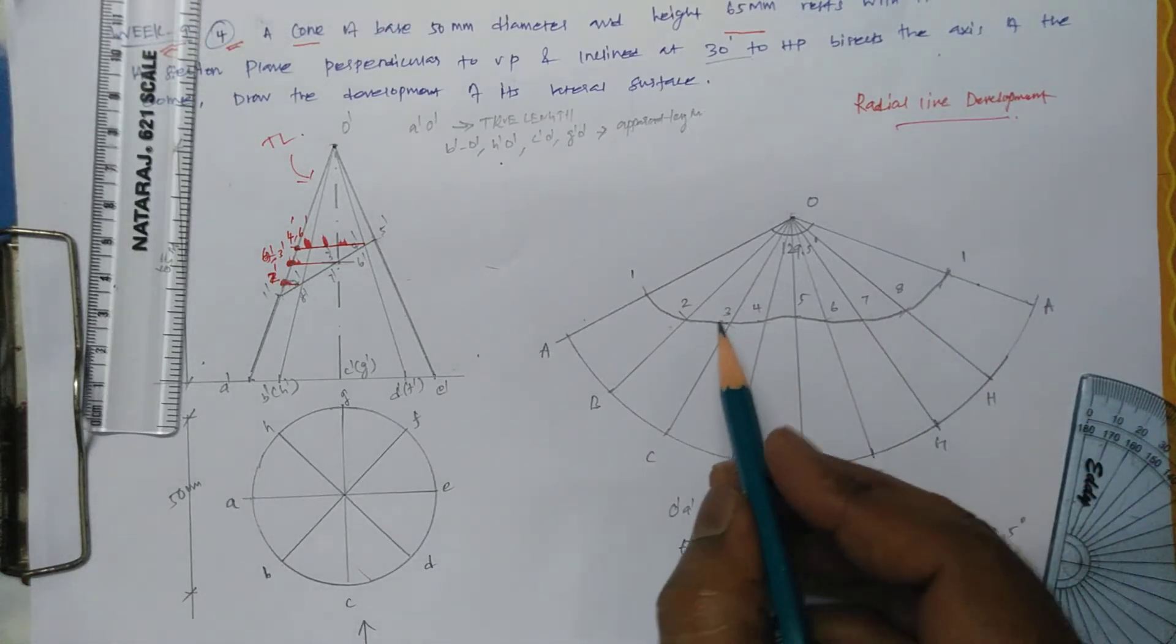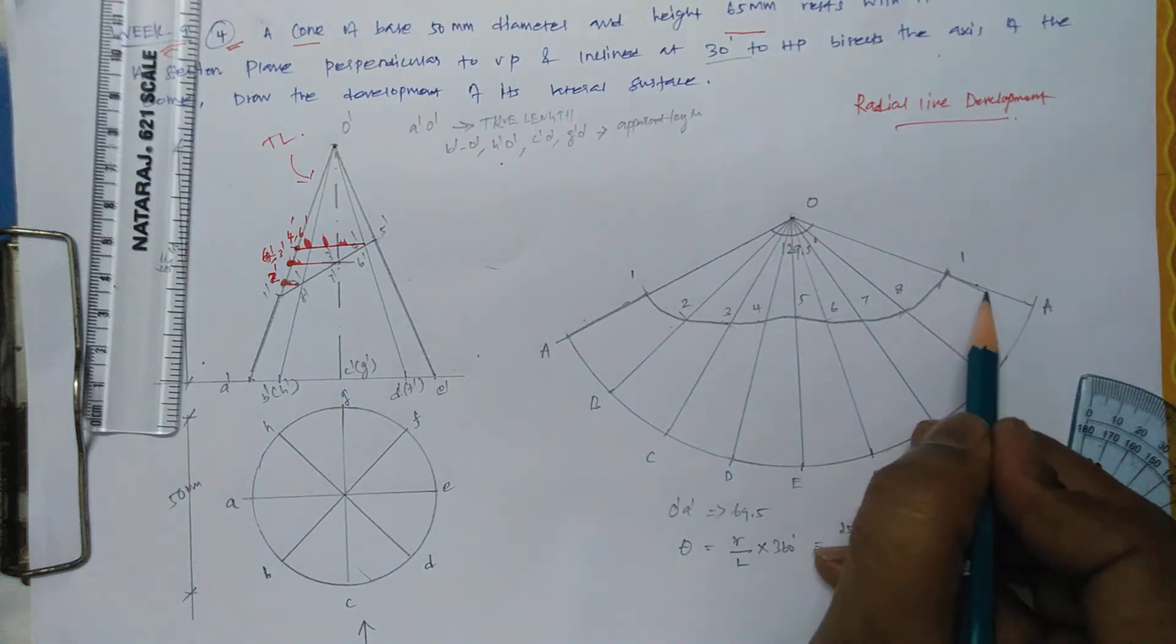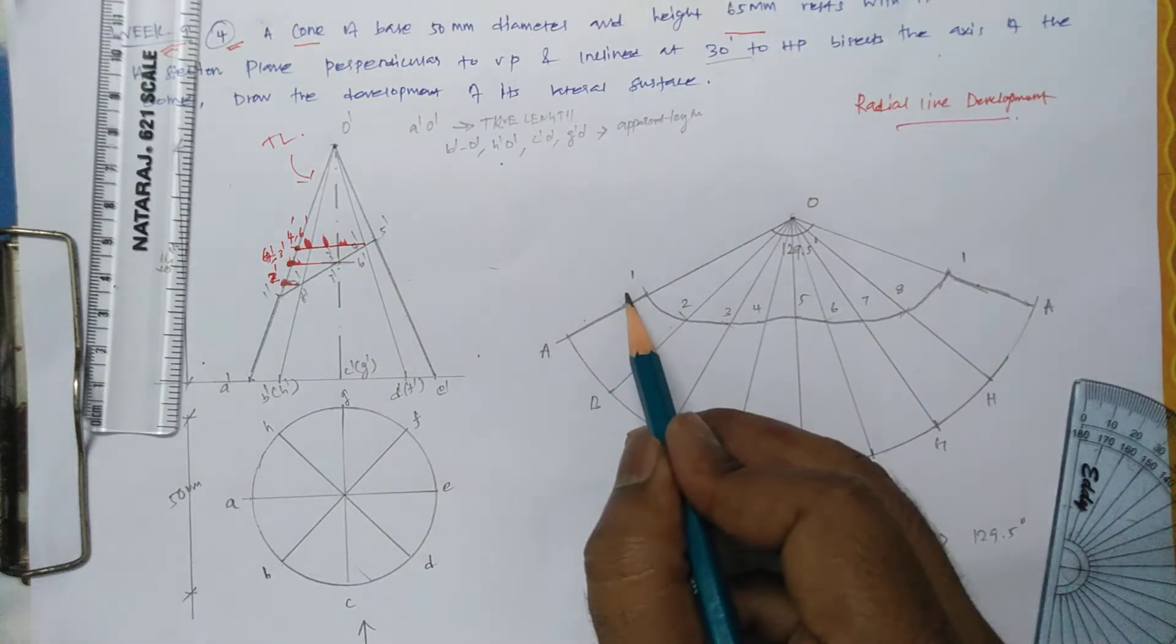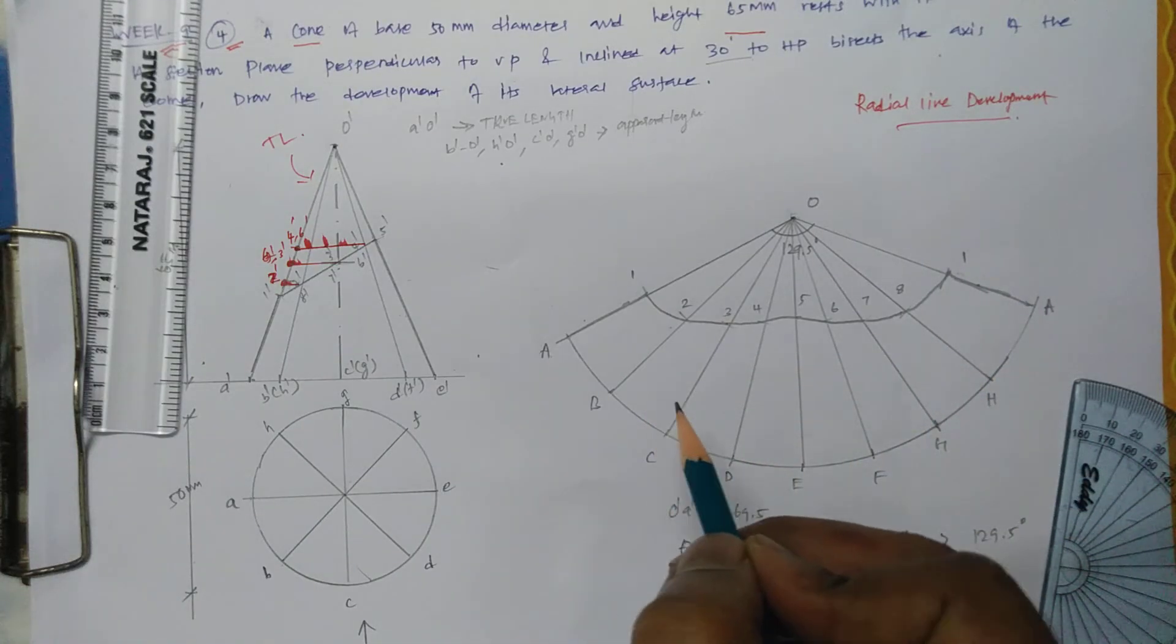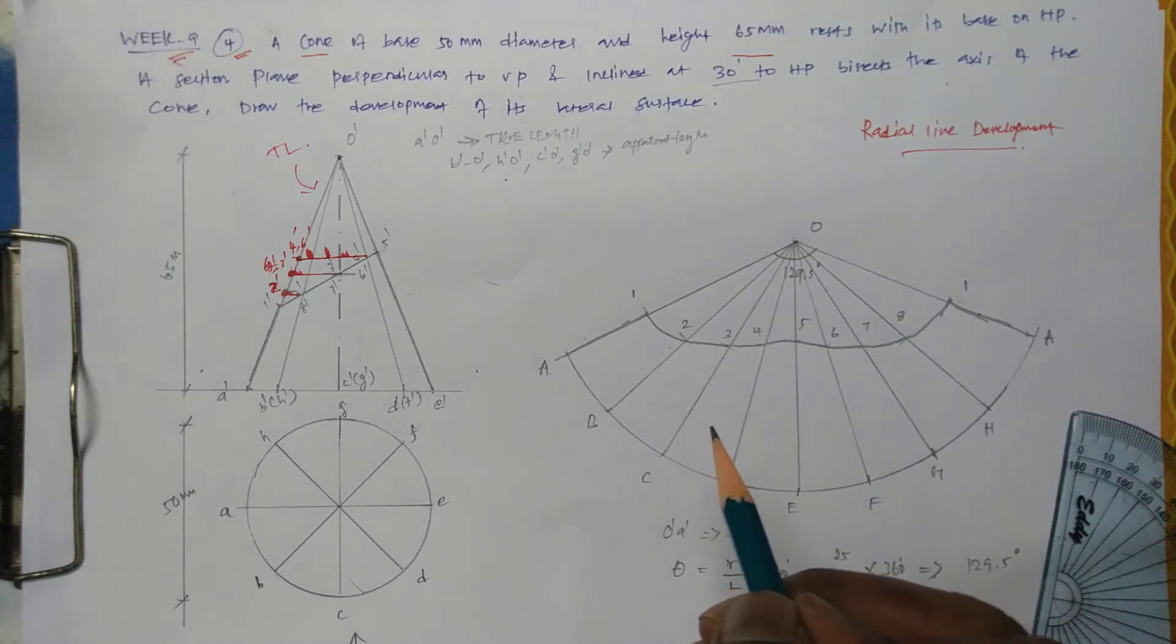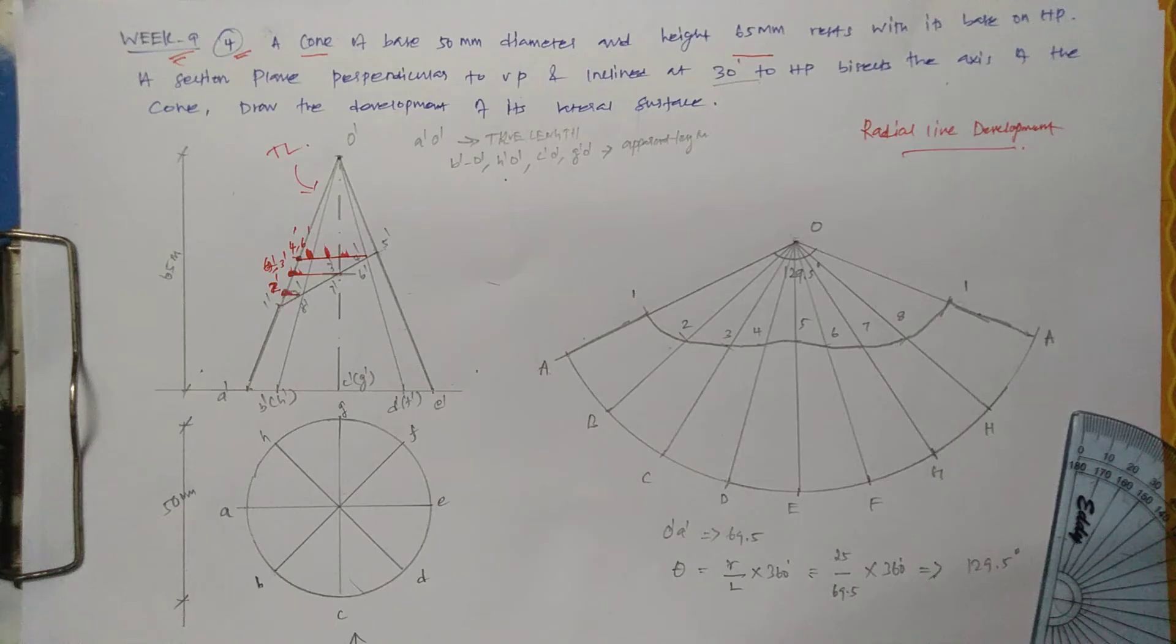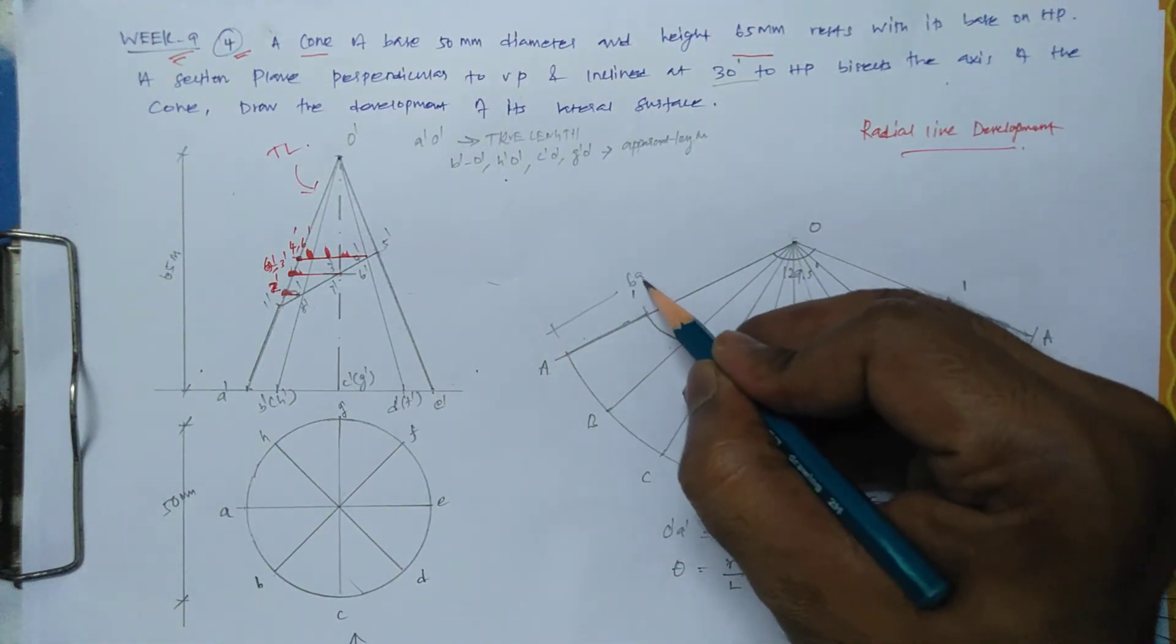So this diagram, the lower portion from A to 1, this entire thing is a complete development of the cone. Complete development of the cone. That's it. The data you need to write here is 69.5.